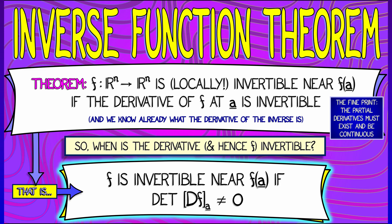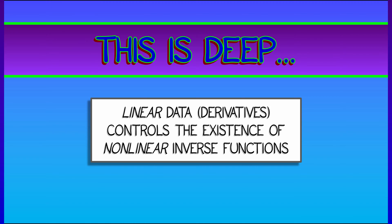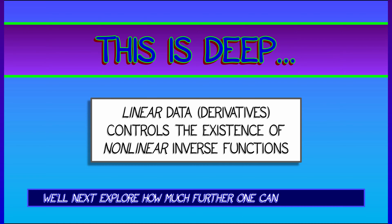This is a big result, this is an important result, this is a deep result. It says that linear information, that is derivatives, can control the existence of non-linear inverse functions locally.